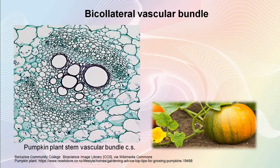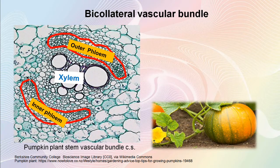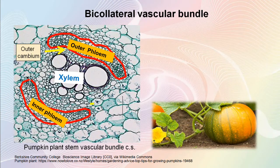For example, in this cross section of the stem of a pumpkin plant, you can see a bicollateral vascular bundle. Xylem is seen in the centre of the vascular bundle. There are two phloem groups — outer phloem and inner phloem. In between outer phloem and xylem, there is a layer of cambium called outer cambium. Between xylem and inner phloem, there is another layer of cambium called the inner cambium. Among all the vascular bundles, bicollateral vascular bundles have a slightly more complicated structure.